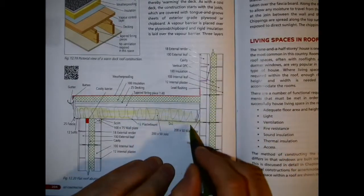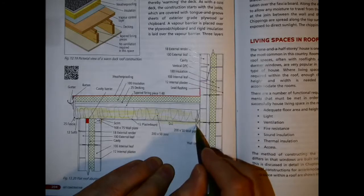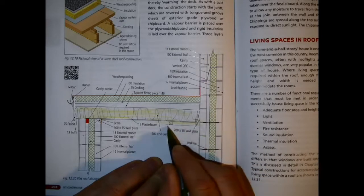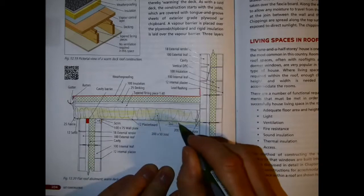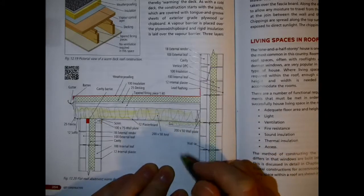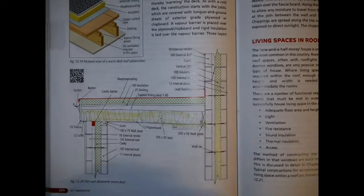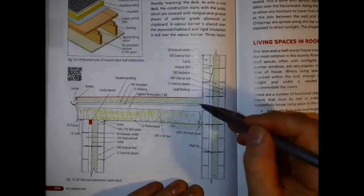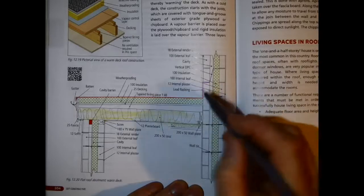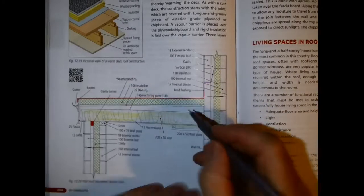The ceiling joists could also possibly have a service cavity which would allow for the breather membrane to be placed in between them, with open space at the bottom of the ceiling joists. I'll come back to that later.